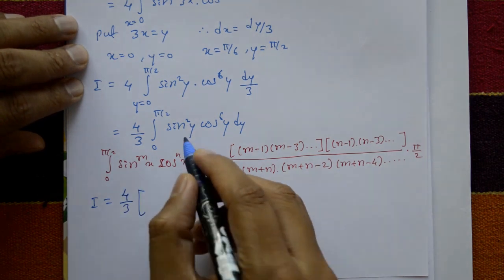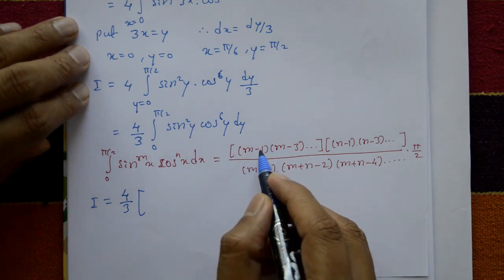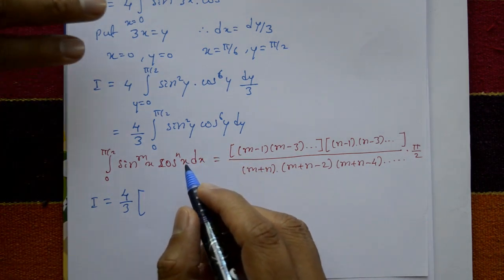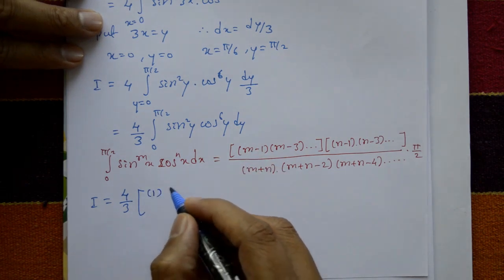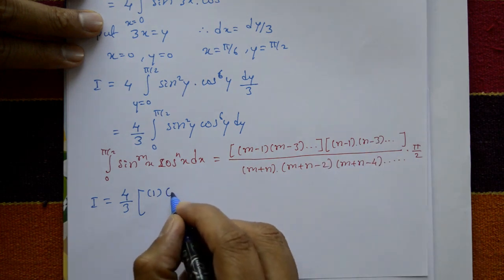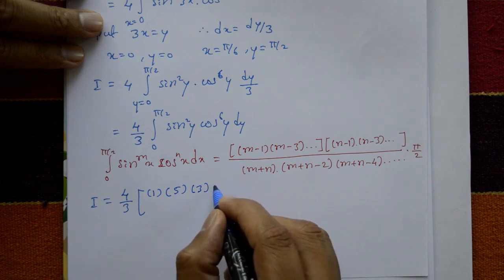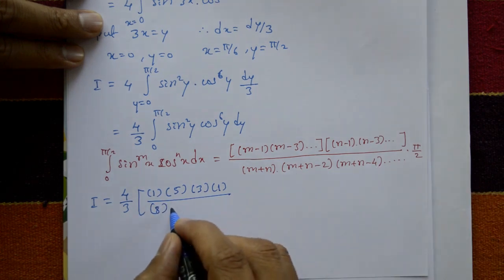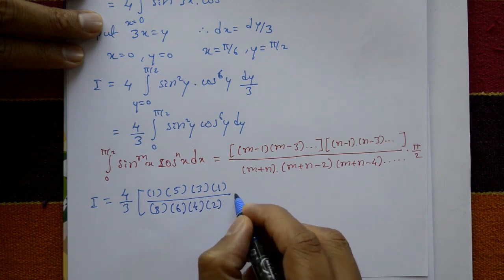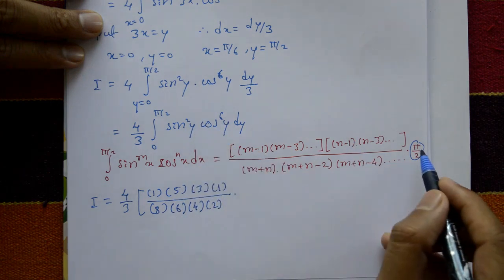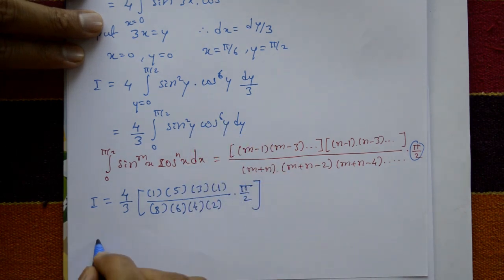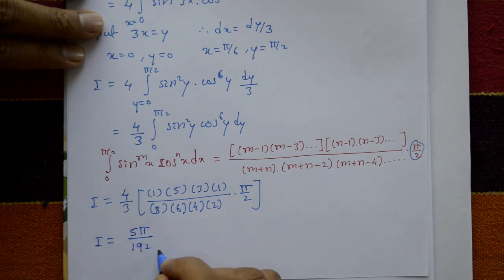Using the reduction formula with m = 2, n = 6: i = (4/3) · [(2−1)] · [(6−1)(6−3)(6−5)] / [(2+6)(2+6−2)(2+6−4)(2+6−6)] · (π/2). This gives (4/3) · [1] · [5·3·1] / [8·6·4·2] · (π/2). Both m and n are even so we include π/2. Cancelling the numbers, the final answer is i = 5π/192.